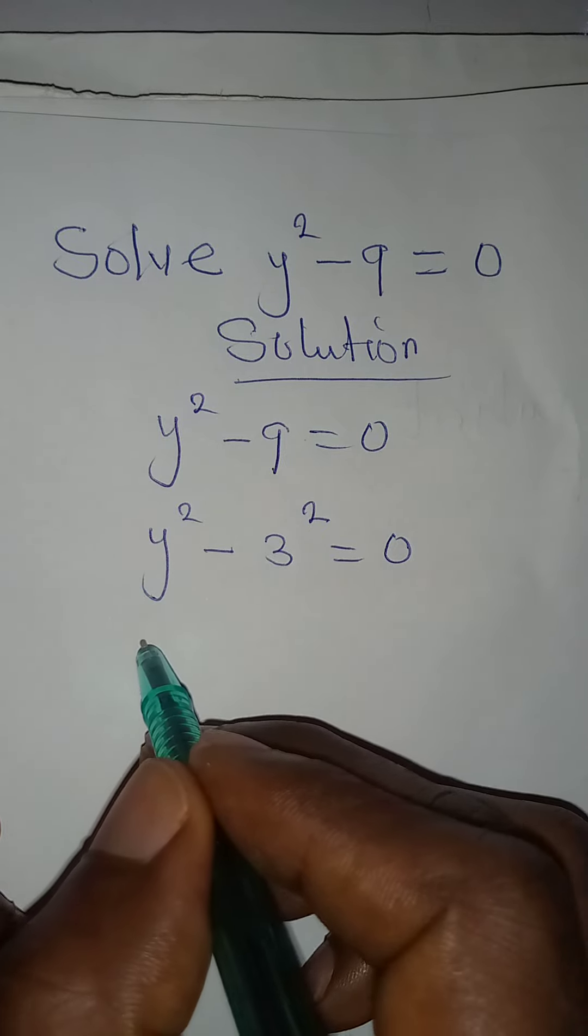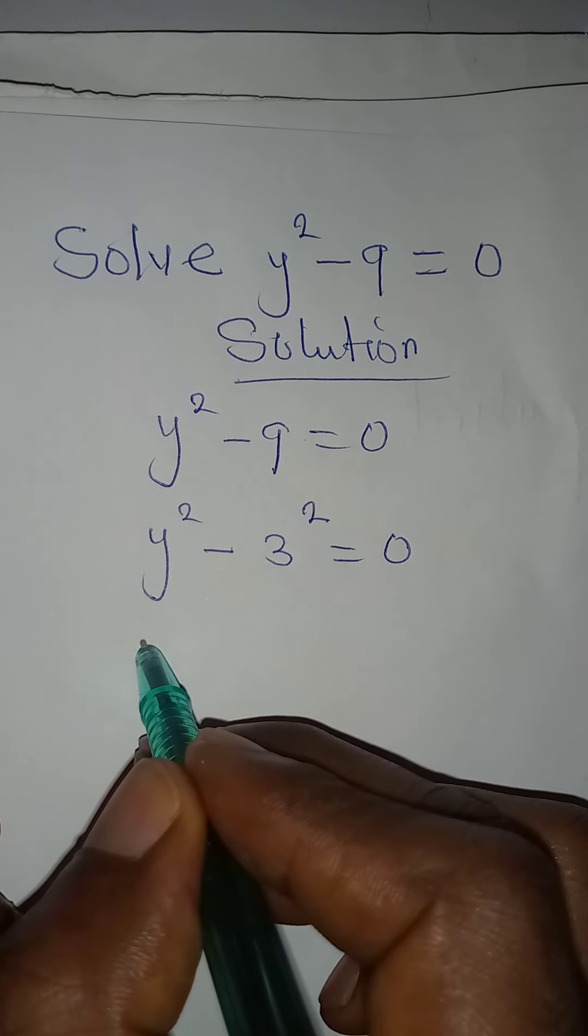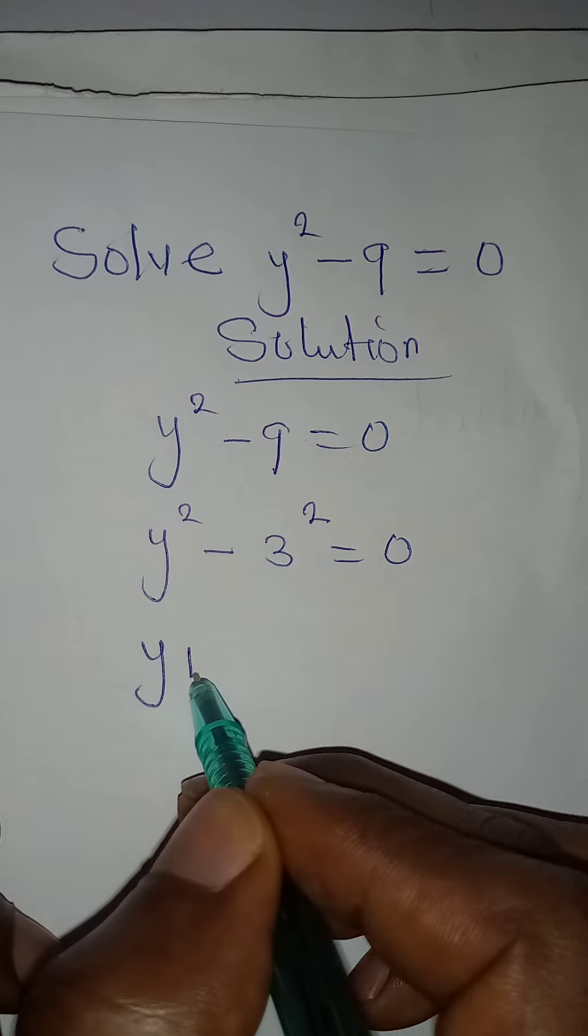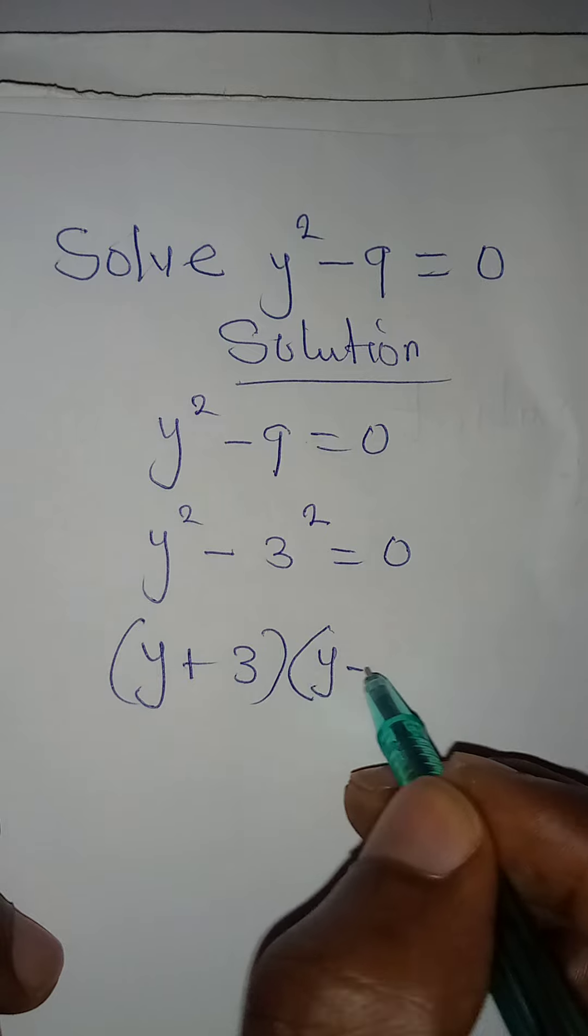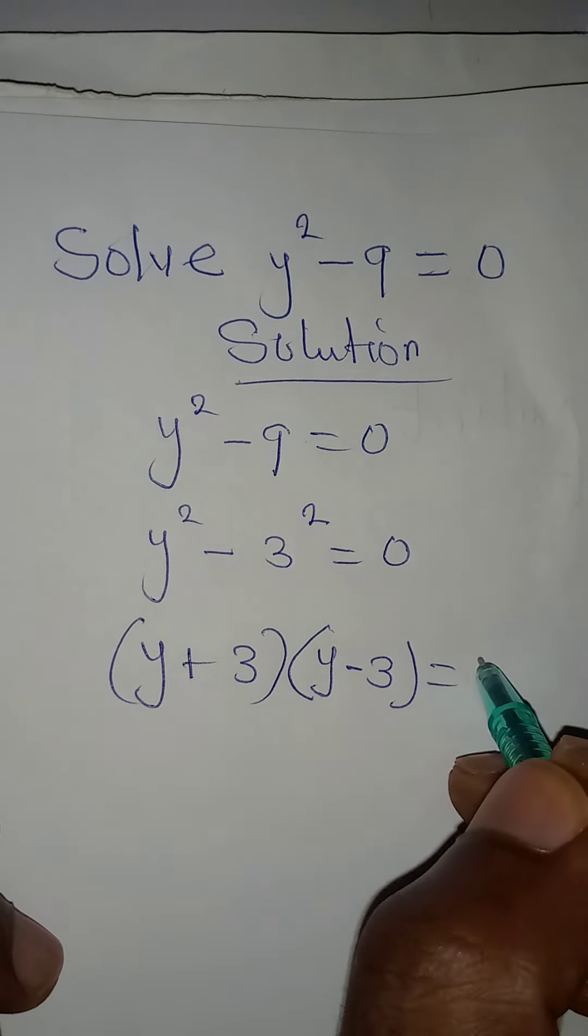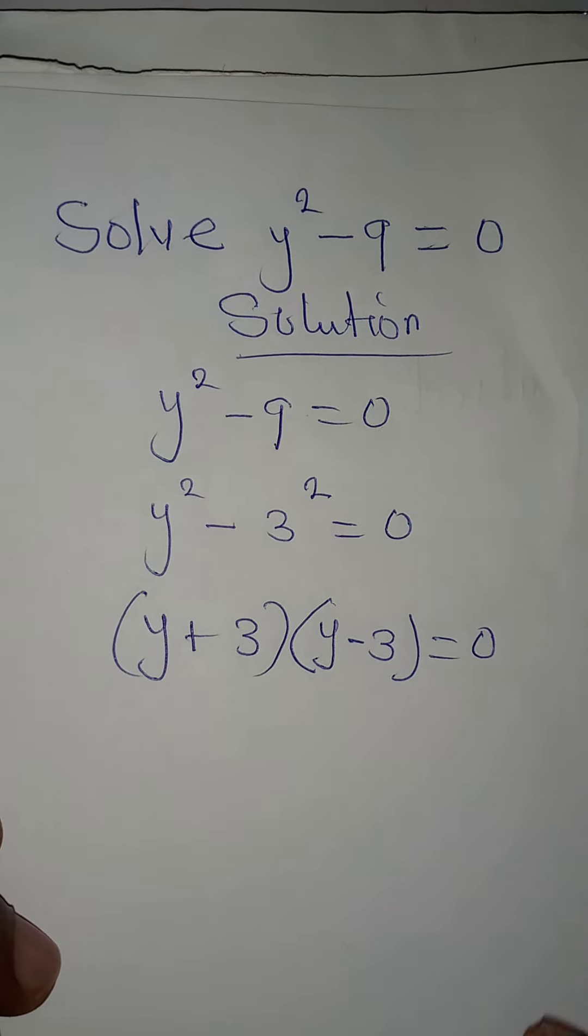So from here, we are going to have y plus 3 in one bracket. And in the second bracket, we have y minus 3, which would be equal to 0. This is according to the law of difference of two squares.